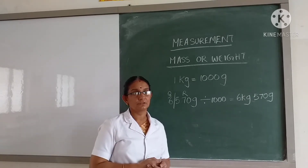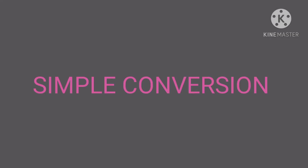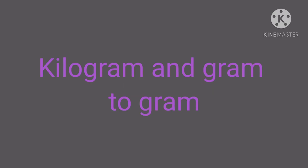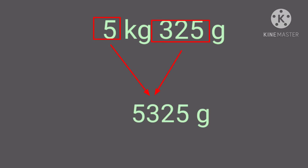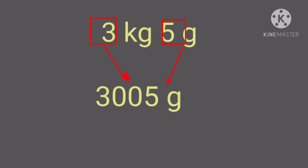Let us see the simplest method of converting kilogram and gram into grams. For example, 5 kilogram 325 gram can be put together and written simply as 5325 grams. Let us try one more: 3 kilogram and 5 gram. Gram is expressed in three digits, so we write it as 3 and 005, giving us 3005 grams.